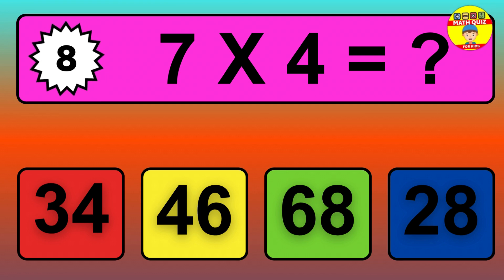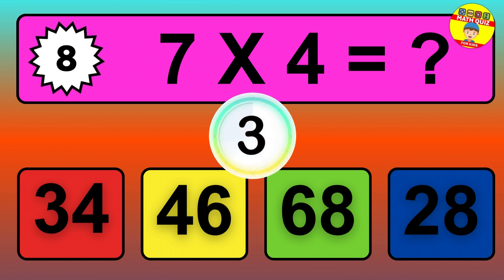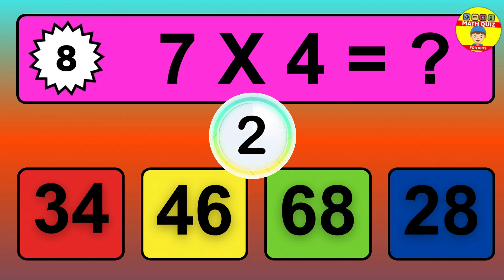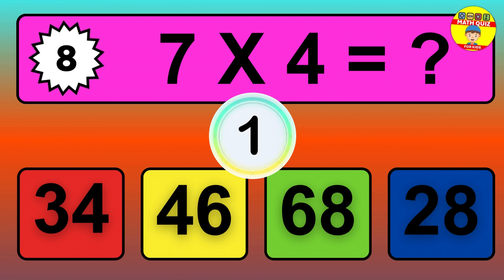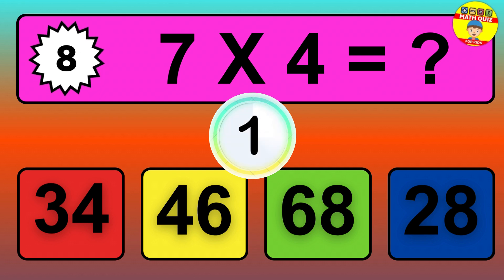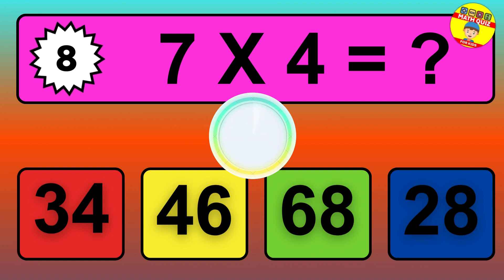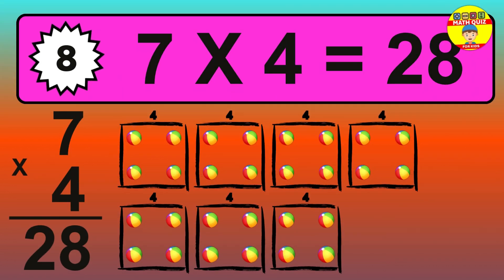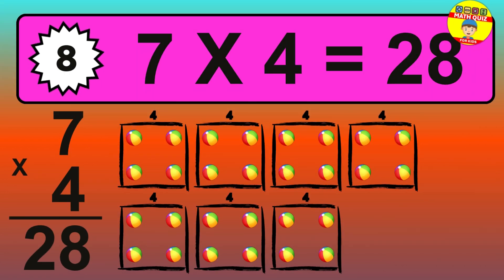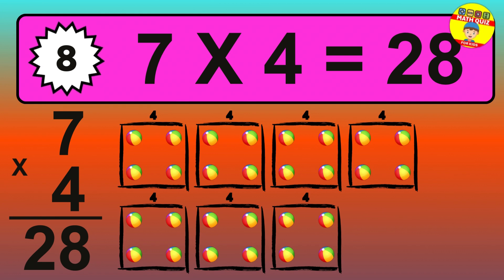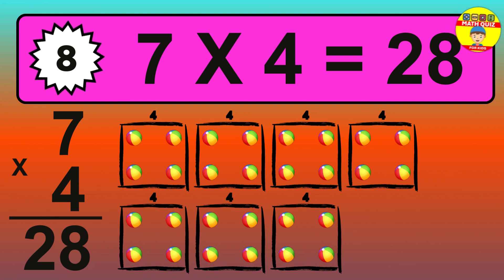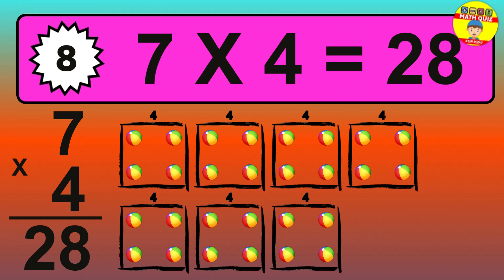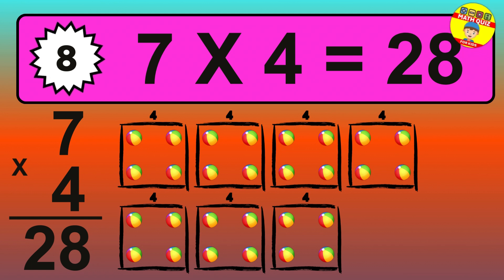Question 8. 7 times 4 equals what? The answer is 7 times 4 is 28. To calculate, we have 7 groups with 4 balls each one. So, how many balls do we have? 28 balls.